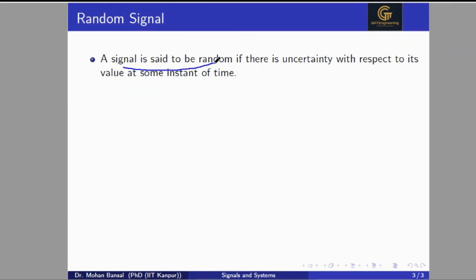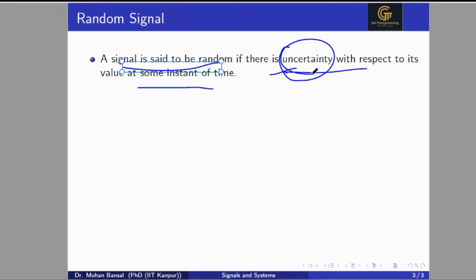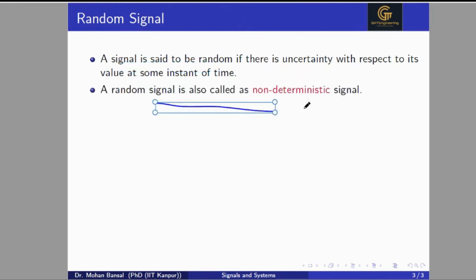Now we come to the random signal. A signal is said to be random if there is uncertainty with respect to its value at some point in time. In the deterministic signal there is no uncertainty, but in a random signal there is some uncertainty — meaning we are not able to find the value of the signal at some time instant. A random signal is sometimes called a non-deterministic signal, meaning we are not able to determine the signal value. It is called non-deterministic because we will not be able to find the value of the signal at any time.